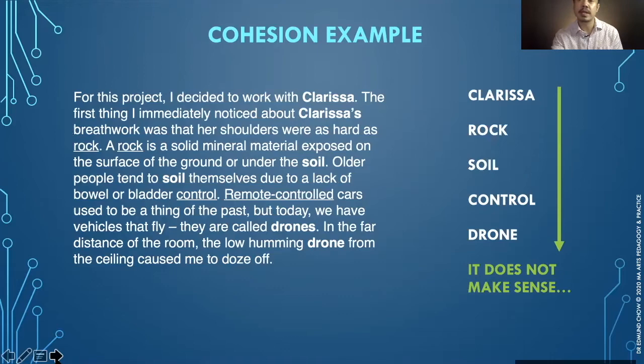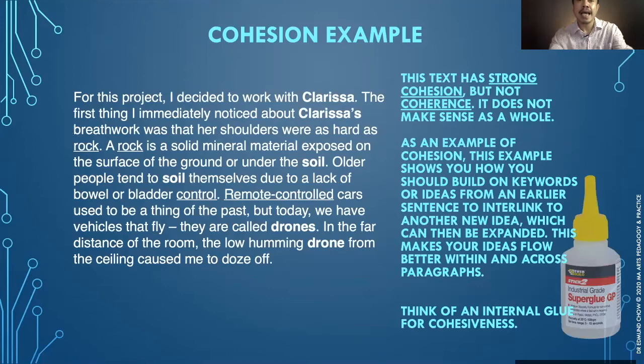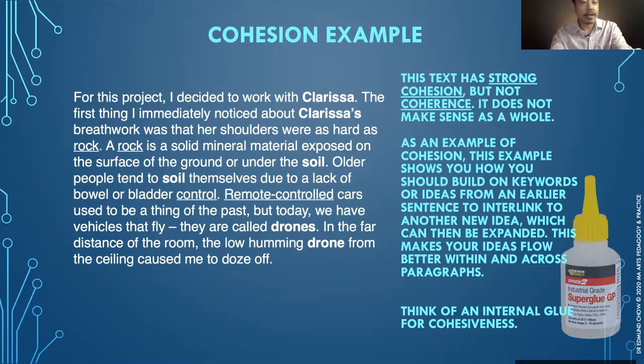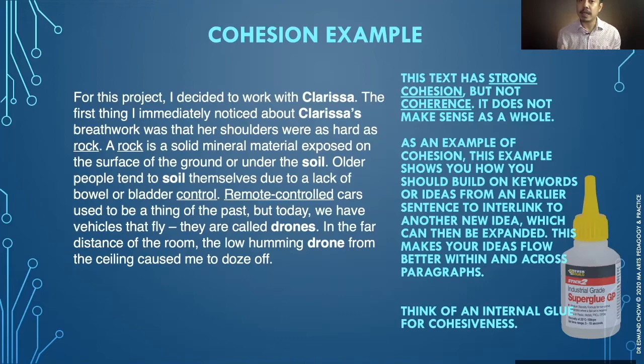This text has strong cohesion but not coherence — it does not make sense as a whole. As an example of cohesion, it shows you how to build on keywords or ideas from an earlier sentence to interlink to a new idea, which can then be expanded. This makes your ideas flow better within and across paragraphs. So think of cohesion as an internal glue. Cohesion is used by writers and readers to create coherence, and cohesive devices contribute to the text's structure, texture, readability, and comprehensibility.